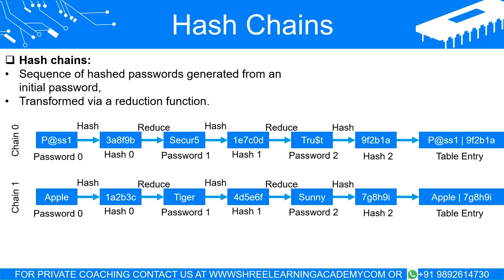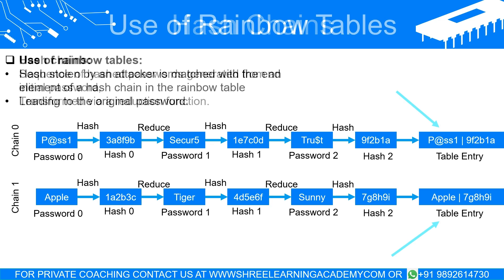For example, let's say we start with the password '1234'. This password is hashed to create a unique string of characters, which is then reduced to form a new password '5678'. This new password is then hashed and the process repeats. Hash chains can have just a few links or thousands, depending on the attacker's resources, with only the starting and finishing passwords retained in the rainbow table.